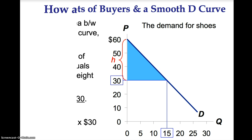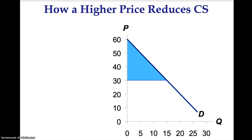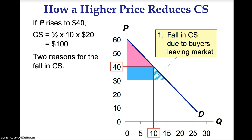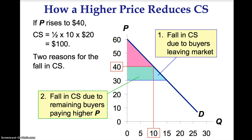If price rises to $40, consumer surplus will change. Now consumer surplus equals one-half times 20 times 10, which equals $100. There are two reasons for the fall in consumer surplus. First, some buyers will leave the market since the price will be above their willingness to pay. Second, the remaining buyers have to pay a higher price, which decreases their individual consumer surpluses.